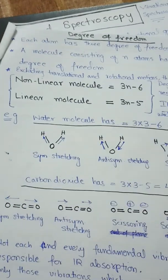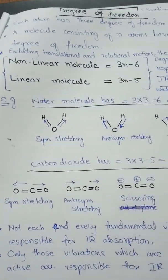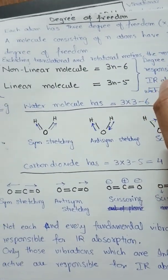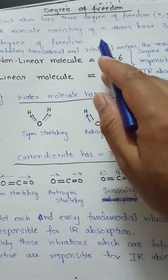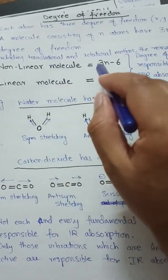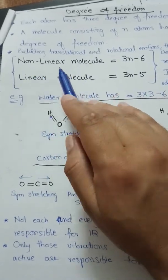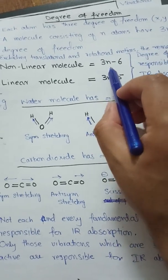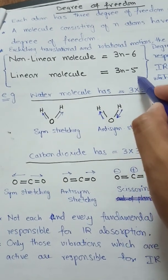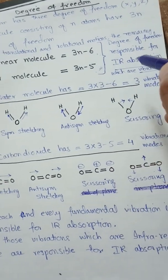Looking at degrees of freedom — how many molecular vibrations occur in a molecule depends on the number of atoms. Each atom has three degrees of freedom along the x-axis, y-axis, and z-axis. A molecule of n atoms will have 3n degrees of freedom, excluding translational and rotational motions. For non-linear molecules, vibrational modes = 3n − 6; for linear molecules, vibrational modes = 3n − 5. Linear molecules therefore have more vibrational modes than non-linear ones.